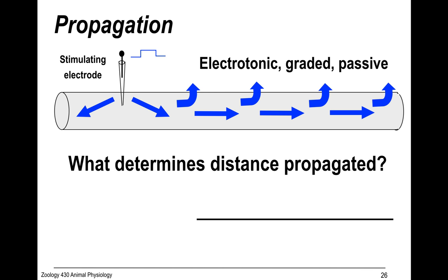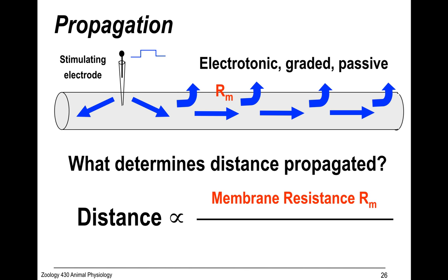What determines the distance that the signal is actually propagated? Well, it's proportional to resistances. Think of anything that flows — like water through a hose. If you have a hose with a bunch of holes in the membrane, that would have weak membrane resistance, and the flow would leak out all over the place and wouldn't travel very far. So it's proportional to how strong the membrane resistance is.